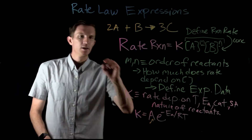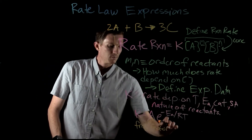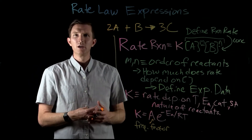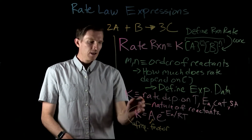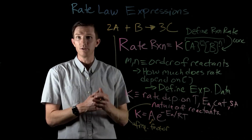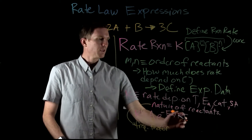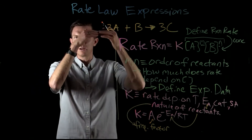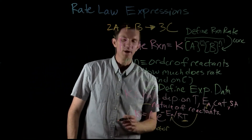A here is our frequency factor. This has to do with the number of effective collisions — how many collisions occur based on the chemical properties or nature of our reaction. The nature of our reactants is built into this frequency factor: the ability for reactants to collide with each other and lead to a reaction. Activation energy is also integrated here — what energy must be exceeded for reactants to form products — and then we see the temperature dependence.